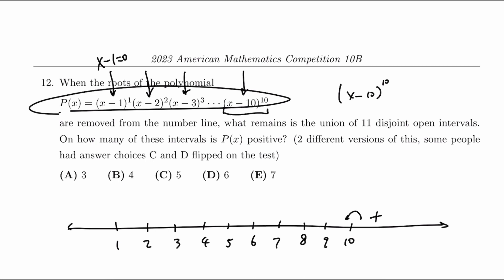However, because it's raising to an even power, it will be non-negative and it is only zero at X equals 10. So everywhere else it will still maintain it's positive. Therefore, between 9 and 10, P(x) is still positive.